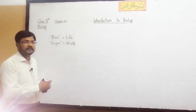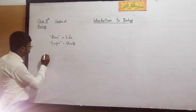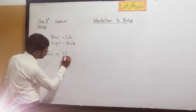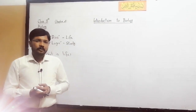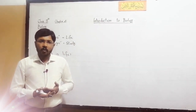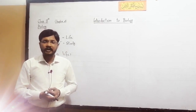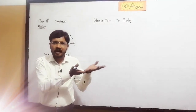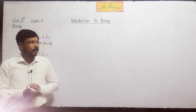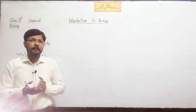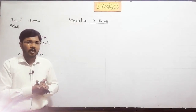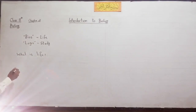Now a question arises here: what is life? Dear students, there are two types of things on the earth — one is living things and the other is non-living things. How can we differentiate between them? How can we call something a living thing or a non-living thing? Living things have particular characteristics, and on these bases we can identify them as living things.